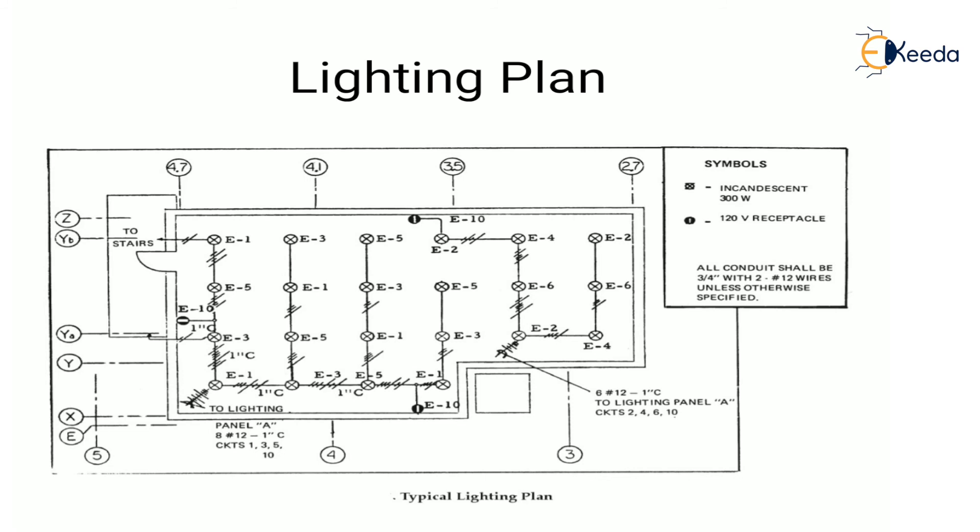Next is lighting plan. Lighting plan is illustrated by the top view of physical electrical location showing all lighting fixtures and other electrical lighting load. This is drawn to scale and shows actual location of the lighting equipment. Conduit and cable for lighting are also physically shown in the lighting plan. So these were all the drawings and plans used in electrical system design.